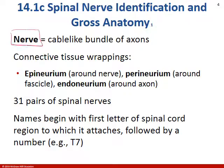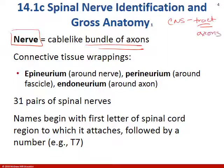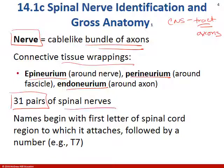A nerve is a bundle of axons. In the central nervous system we called these tracts; in the peripheral nervous system we call them nerves. We still have connective tissue wrappings: epineurium, perineurium, and endoneurium. We have 31 pairs of spinal nerves, usually labeled with the first letter of the region followed by a number — for example, T7 would be thoracic spinal nerve number seven.